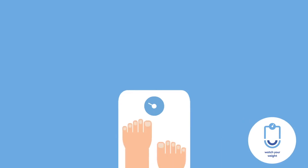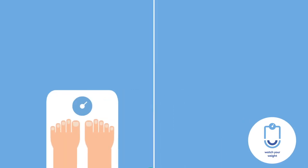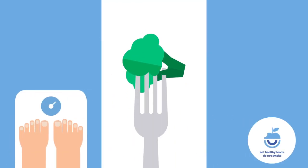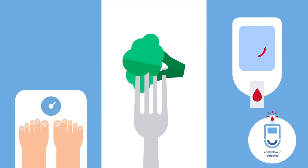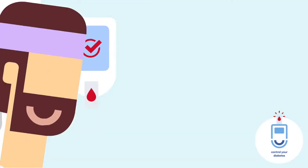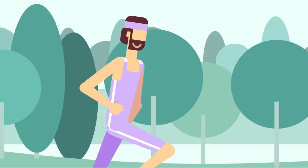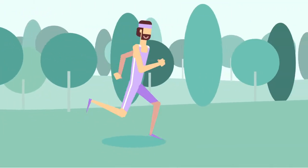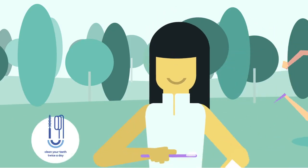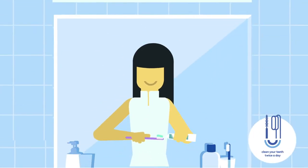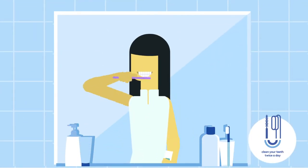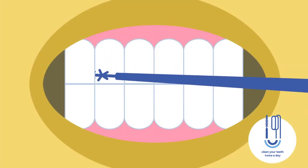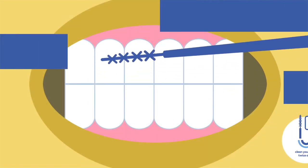Watch your weight. Eat healthily and don't smoke. Control your diabetes. Reduce stress and practice physical activity. Brush your teeth twice a day. Clean in between the teeth every day. Use interdental brushes or floss.